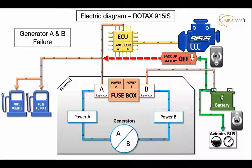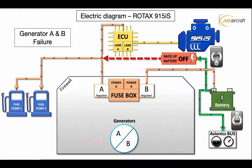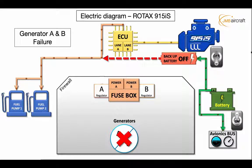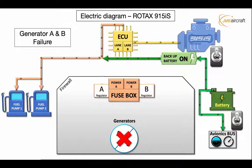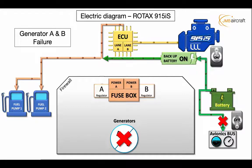So what happens if we have both a failure of generator A and generator B? If we have a total loss of generators, we will initially have an engine-out situation. If we have enough altitude and sufficient time, we can flip the backup battery switch, and what this does is change the circuit from the battery to go directly to the fuel pumps and the ECU, and we can run the engine off of battery power alone. It is important in this type of situation to turn off any unnecessary equipment. If you are flying a VFR airplane on a VFR day, you can shut off any nav lights, landing lights. If you have two Garmin G3Xs, maybe shut one off and leave the other on. This way you can extend the range of how far you can fly on battery power alone.